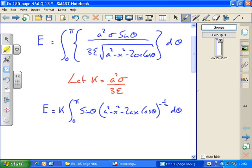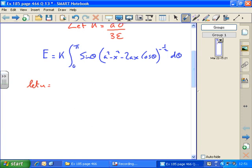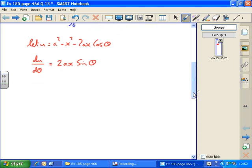Now I'm going to let u equal a squared minus x squared minus 2ax cos theta. Therefore, du by d theta equals, a squared and x squared disappear, cos becomes minus sin, so the whole thing becomes 2ax sin theta. Cos becomes minus sin and minus minus gives us a plus. Rearranging for d theta, du over 2ax sin theta.